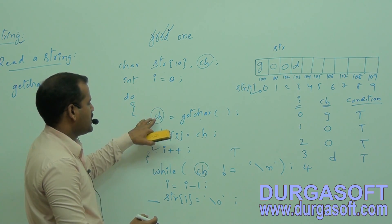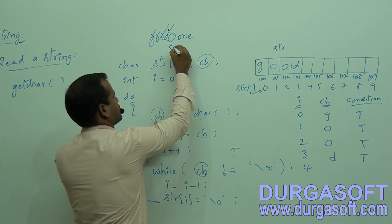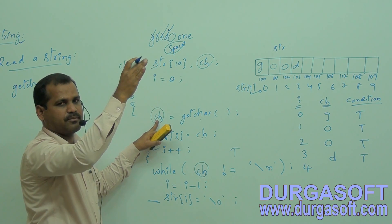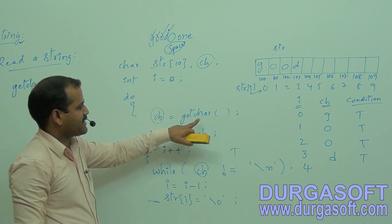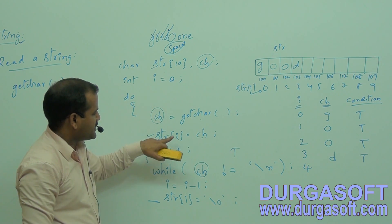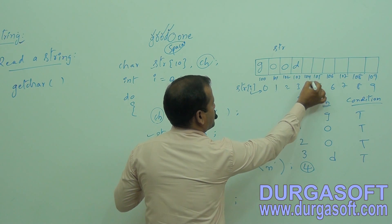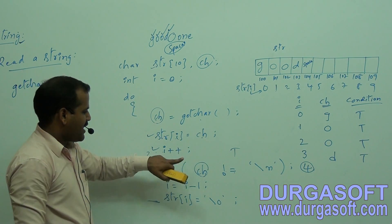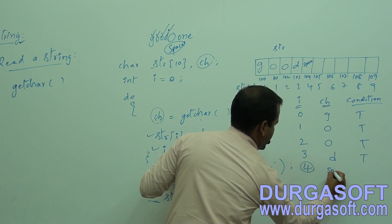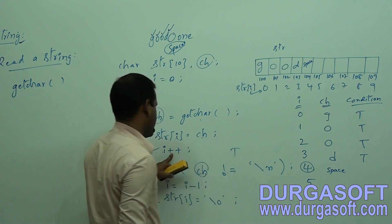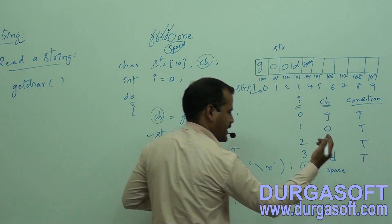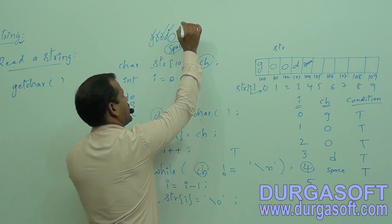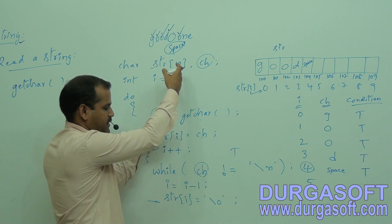The next value for ch is a space. Unlike the scanf() function — where getting a space stops reading characters — the getchar() function will take the space and store it in the string. string[4] = space is stored, and i is incremented to 5. The while condition: space is not equal to newline, so condition is true. There is no problem taking space with getchar() inside a loop. That is the key point to observe here.